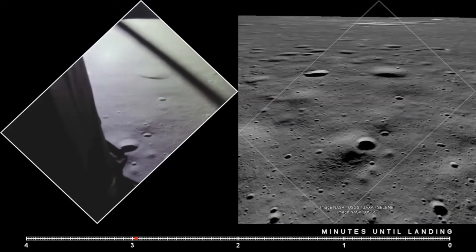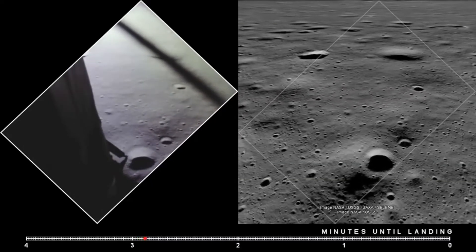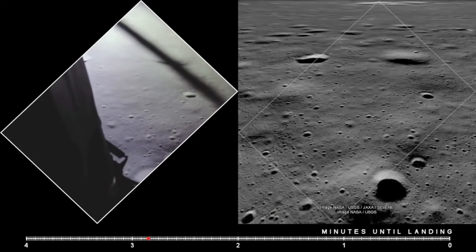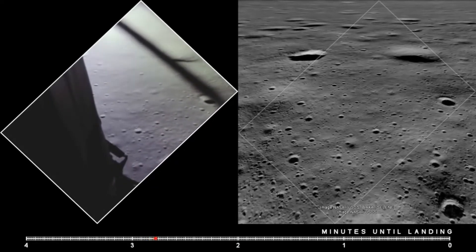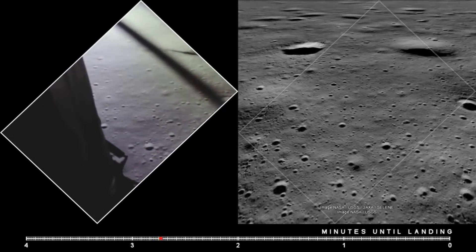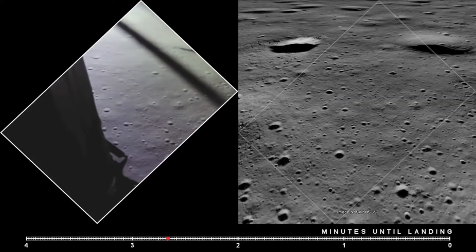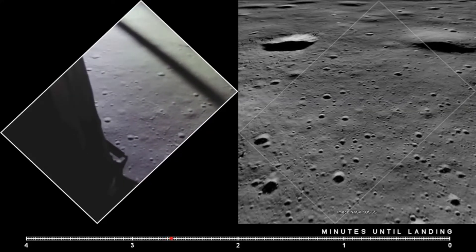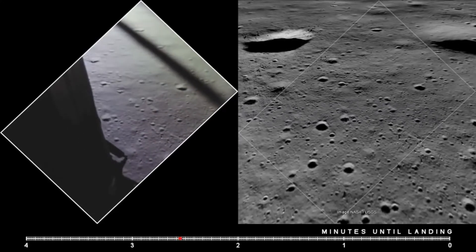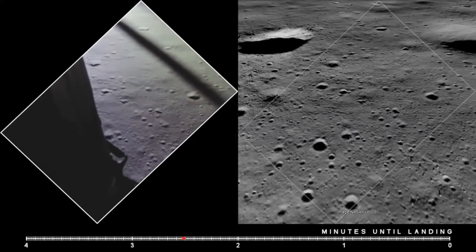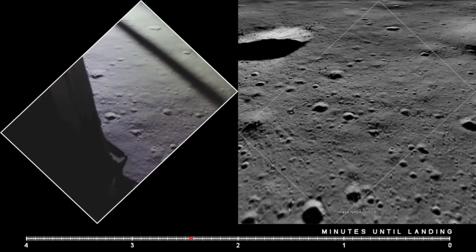Altitude 1,400 feet. Still looking very good. Roger. 12,02, we copy it. 35 degrees. 750. Coming down to 23. 700 feet, 21 down, 33 degrees. 100 feet, down at 19. 540 feet, down at 30, down at 15.